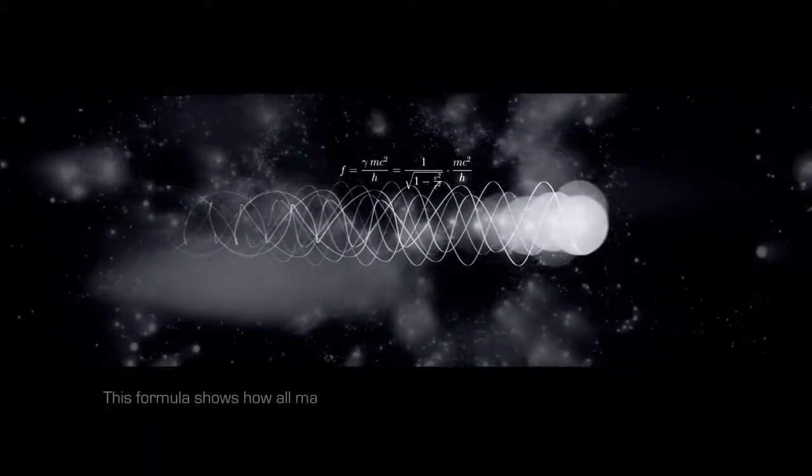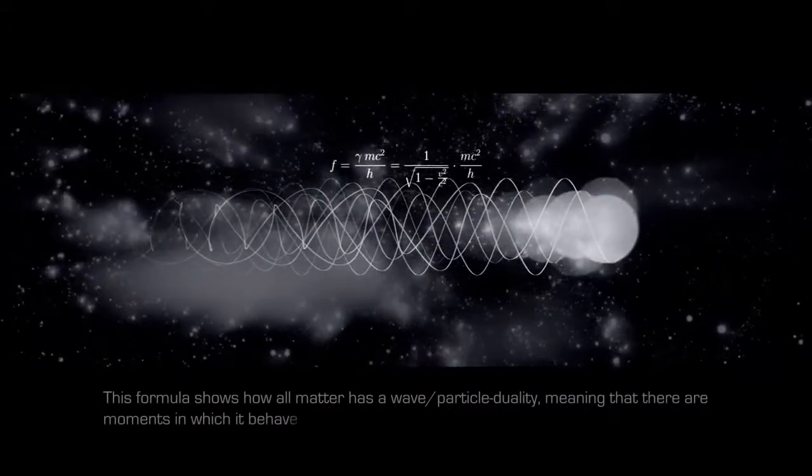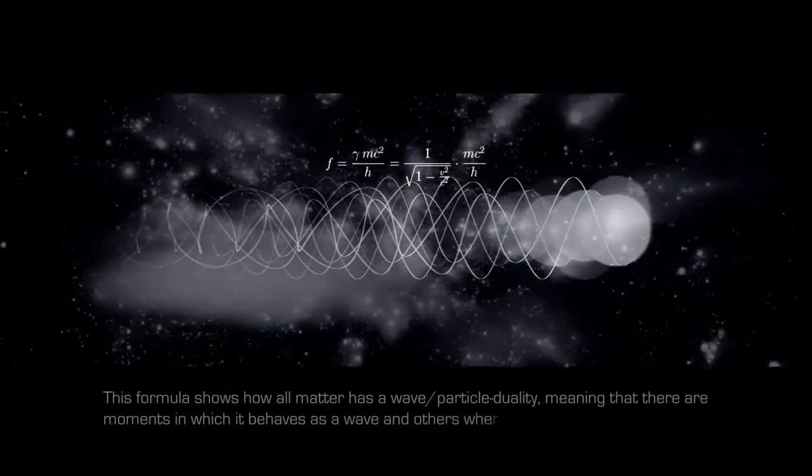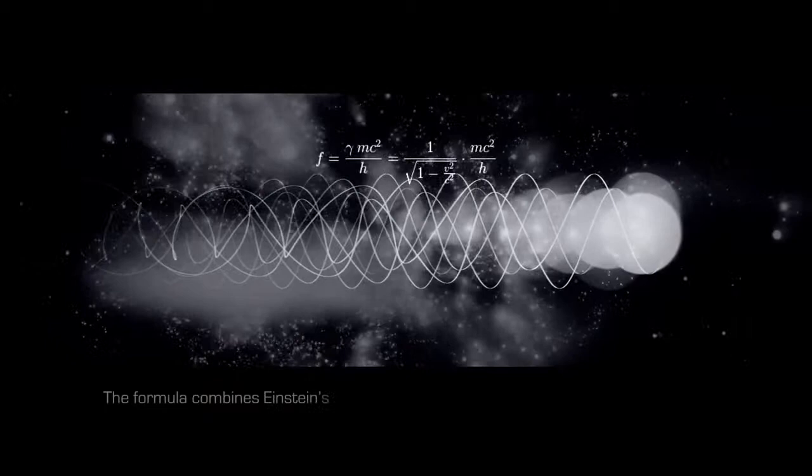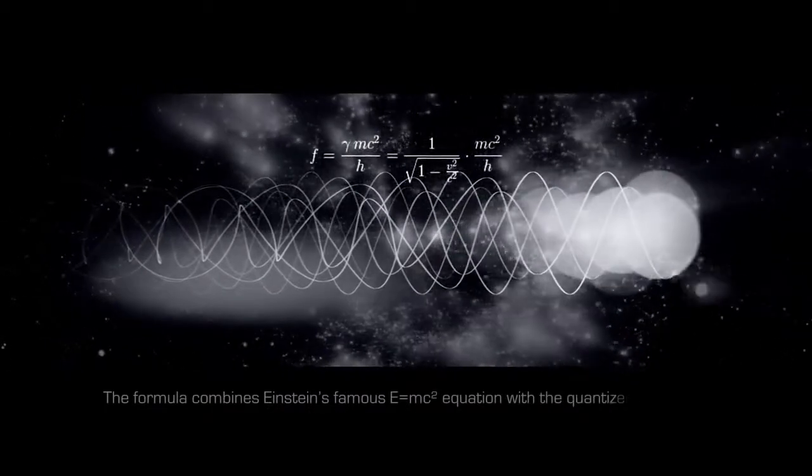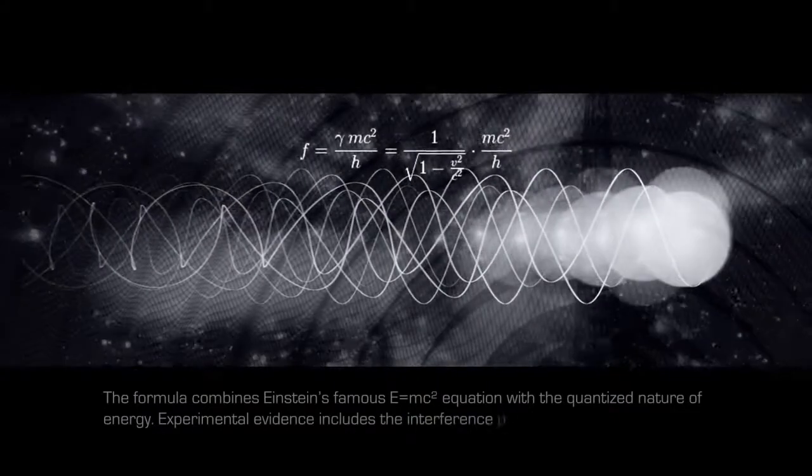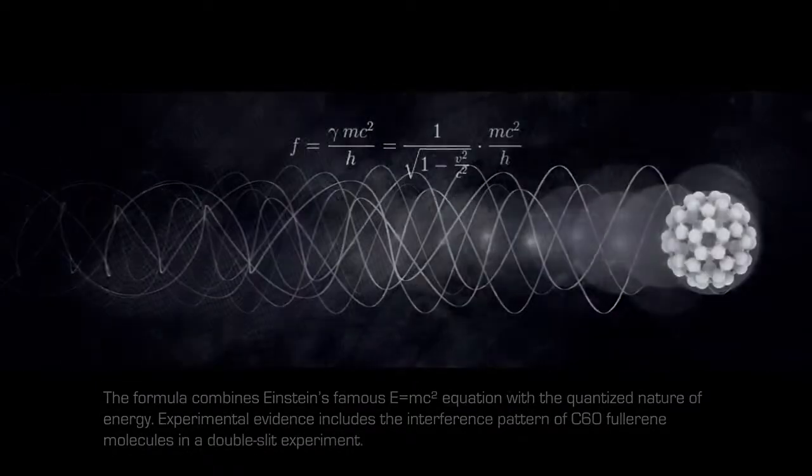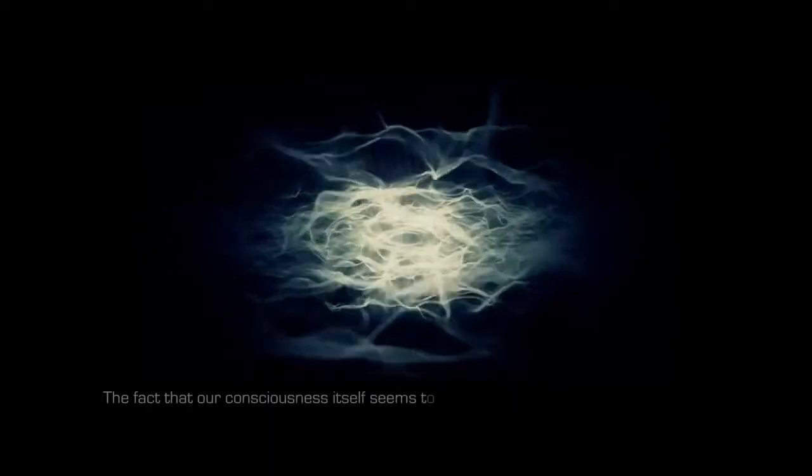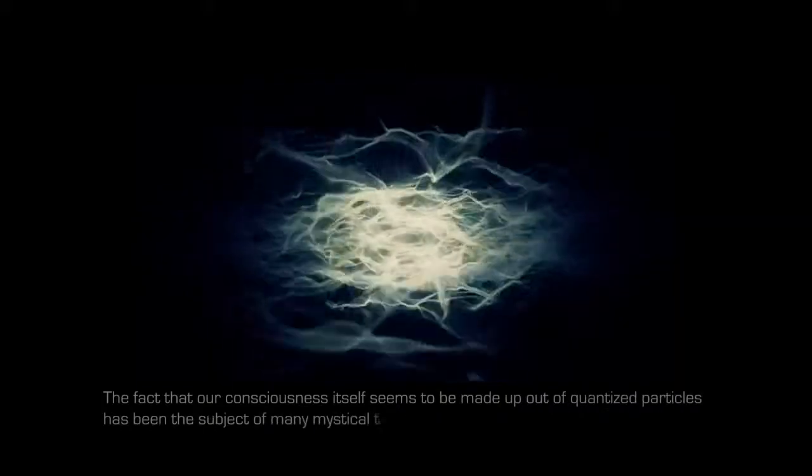This formula shows how all matter has a wave-particle duality, meaning that there are moments in which it behaves as a wave, and others where it behaves as a particle. The formula combines Einstein's famous E=mc² equation with the quantized nature of energy. Experimental evidence includes the interference pattern of C60-Fullerene molecules in a double-slit experiment. The fact that our consciousness itself seems to be made up out of quantized particles has been the subject of many mystical theories.